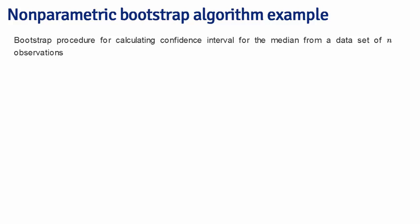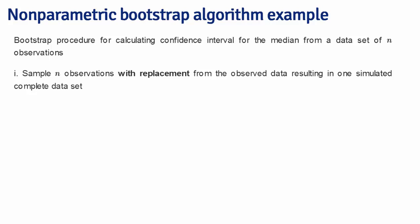The data that we have is a vector of length n. Then what we're going to do is resample n observations with replacement from the observed data to get a resampled complete data set.